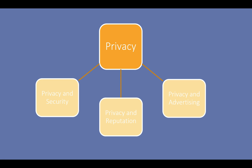They break down online privacy into three categories, and I think these areas are important for students of all ages and really all of us who are online to be knowledgeable about. The first area is privacy and security. This involves keeping personal, identifiable information private to reduce identity theft. Identifiable numbers like social security numbers fall into this area.